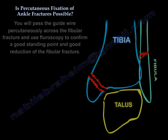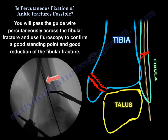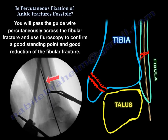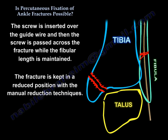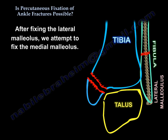You pass the guide wire percutaneously across the fibular fracture and use fluoroscopy to confirm a good starting point and good reduction. The screw is inserted over the guide wire and passed across the fracture while fibular length is maintained and the fracture is kept in a reduced position using manual reduction techniques.